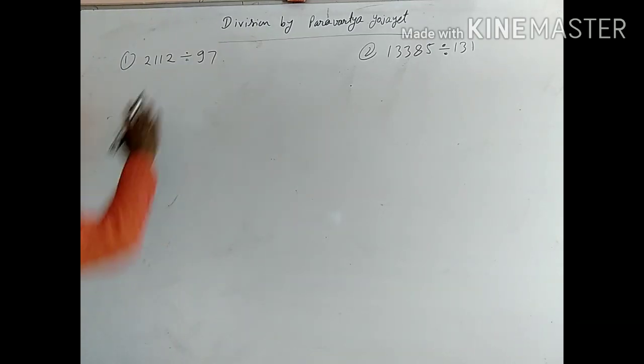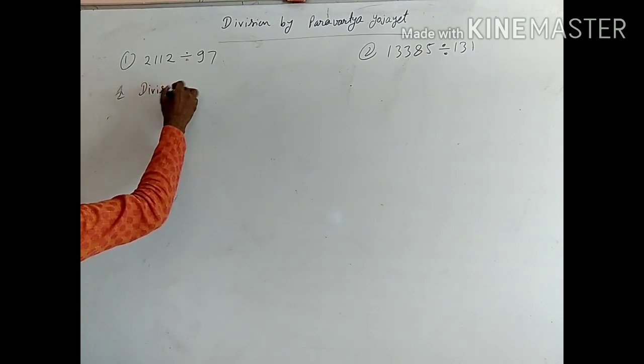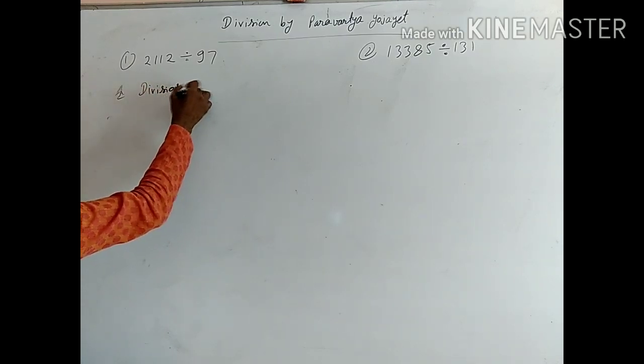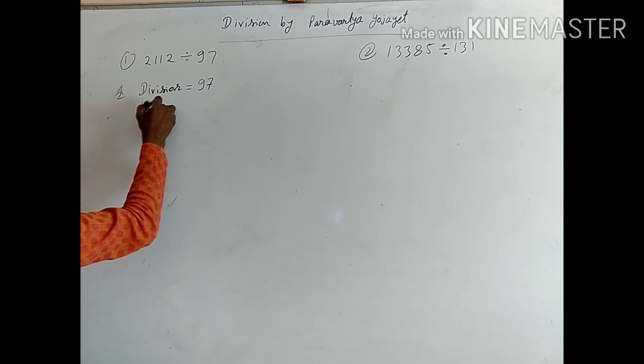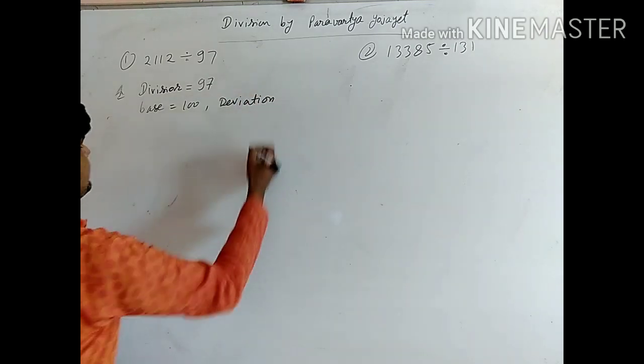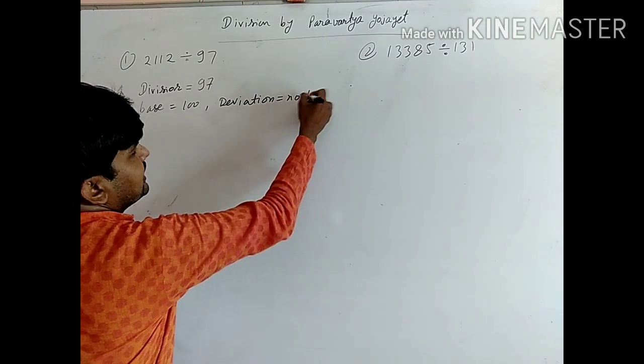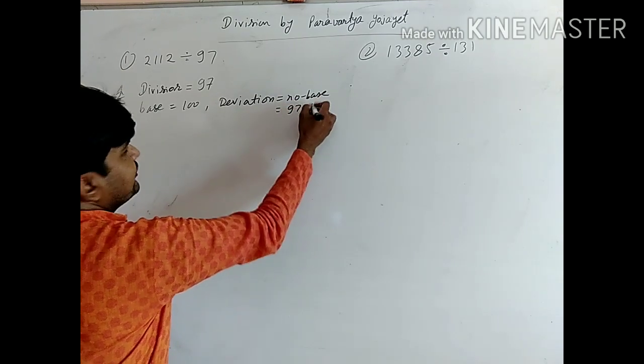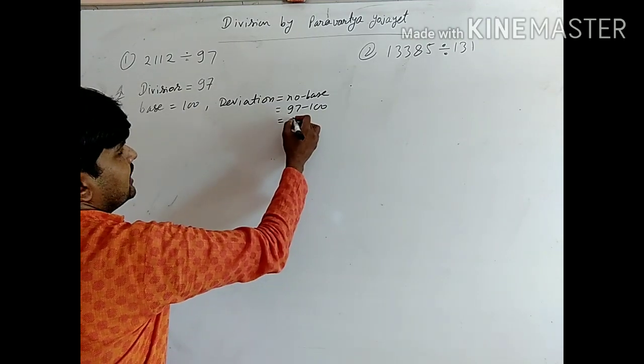So first we are going to solve question number first, that is 2112 divided by 97. So here divisor is 97. Now base of it is 100. Now deviation is number minus base, so number minus base equals to 97 minus 100. So that is minus 3.